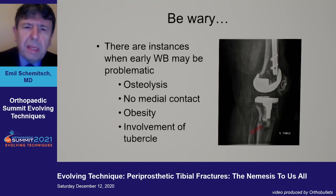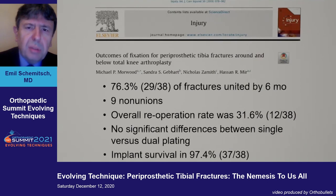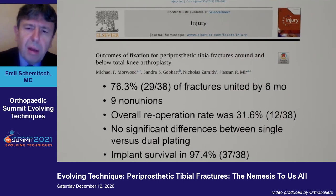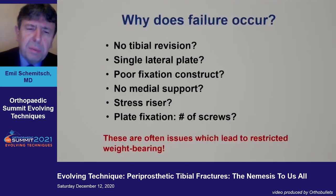You really want to be careful when there's osteolysis — if there's no medial contact, you need a medial plate. Obesity can be a real challenge, and if there's involvement of the tubercle, that adds further complexity. One of the larger series recently published in Injury had a quarter of patients still not healed by six months, with nine non-unions and a reoperation rate over 30%, although they didn't find a significant difference between single and dual plating.